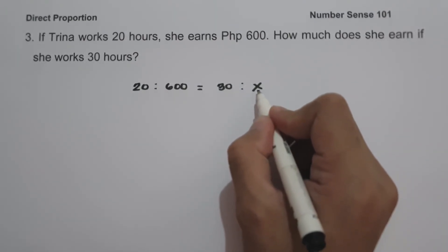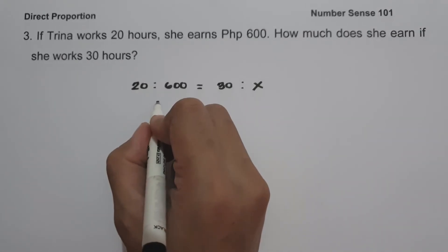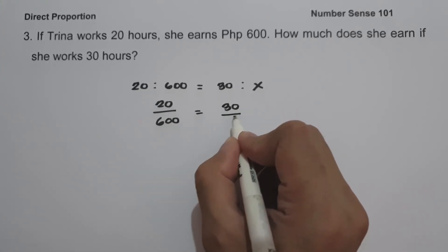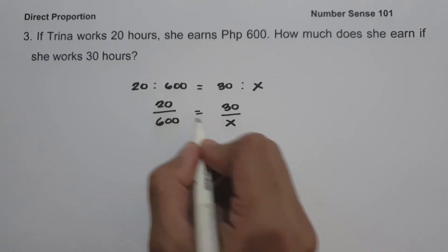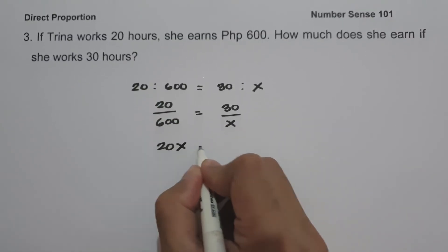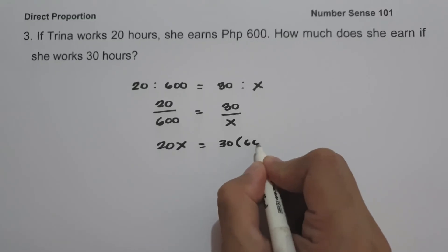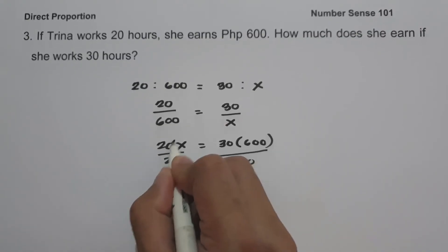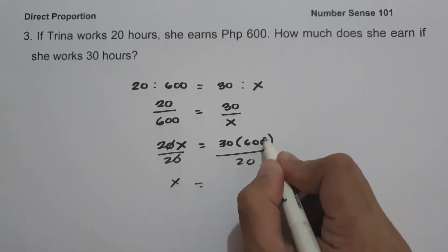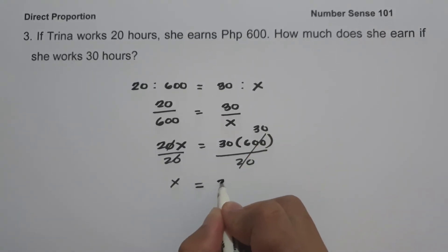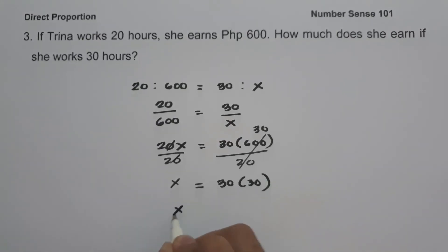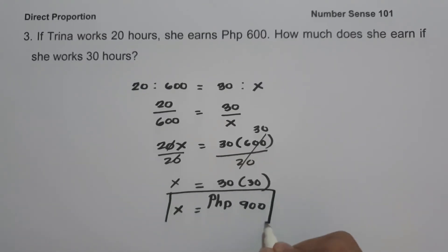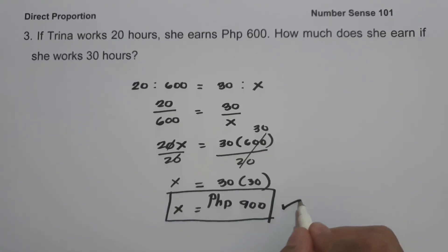X is the amount she earns if she works 30 hours. So let us rewrite this one as 20 over 600 equals 30 over X. So let us have 20 multiplied by X, that is 20X, and then 30 times 600. Let us divide both sides by 20. Let us cancel this one. 600 divided by 20, that is 30. So we are going to have 30 times 30, and that is 900 pesos. So this will be the amount she earned if she works 30 hours, and this will be our answer.